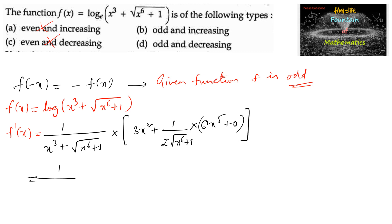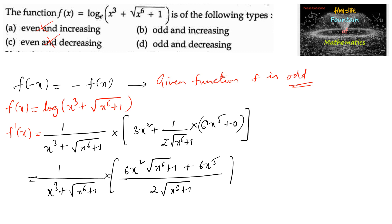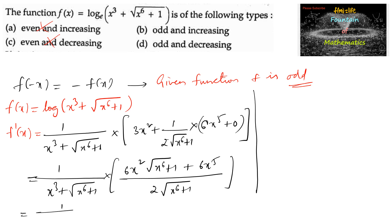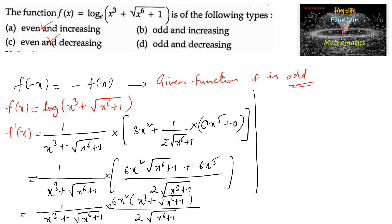Simplifying, we have 1/(x³ + √(x⁶ + 1)) multiplied by (3x² · 2 · √(x⁶+1) + 6x⁵) all over 2√(x⁶ + 1). Taking 6x² common in the numerator gives (x³ + √(x⁶ + 1)) divided by 2√(x⁶ + 1). The factor (x³ + √(x⁶ + 1)) cancels, leaving f'(x) = 3x²/√(x⁶ + 1).